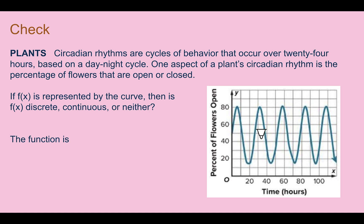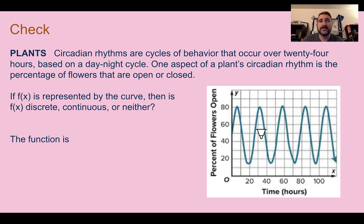Check your understanding: read through the situation and determine if the graph shown is discrete, continuous, or neither. Pause the video now and complete the check. You should have said this function is continuous — it is drawn with a smooth curve that keeps going up and down, but there are no gaps in the curve.